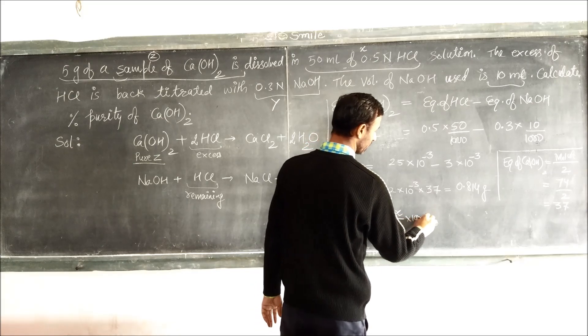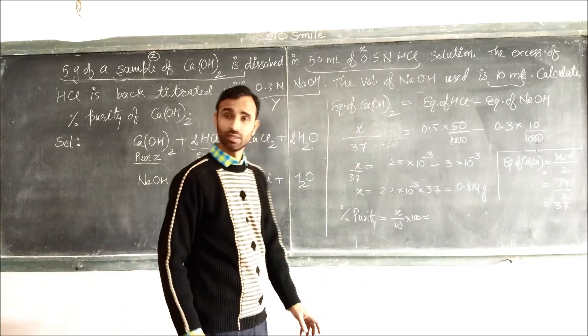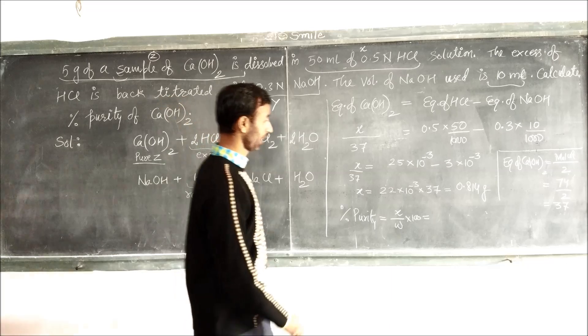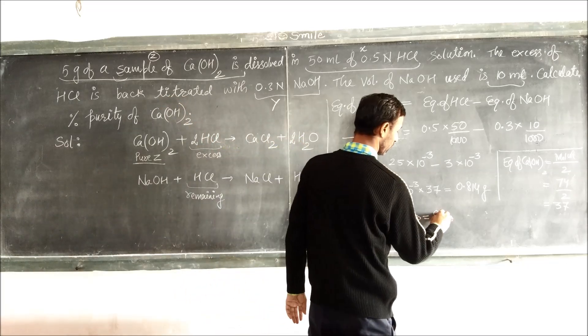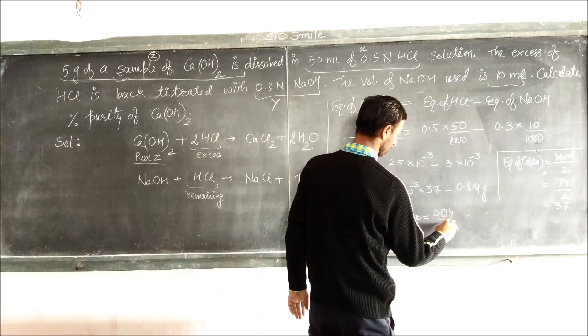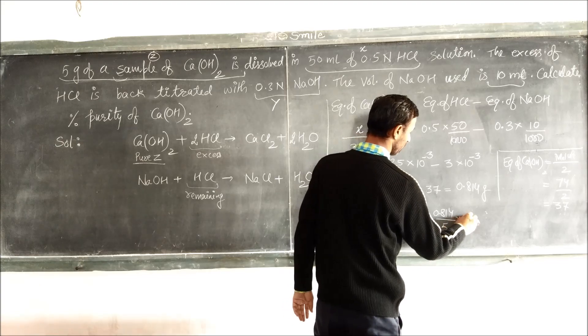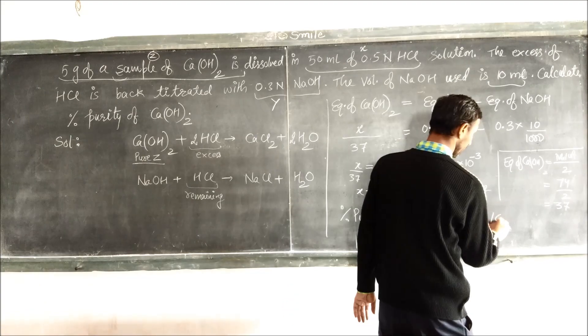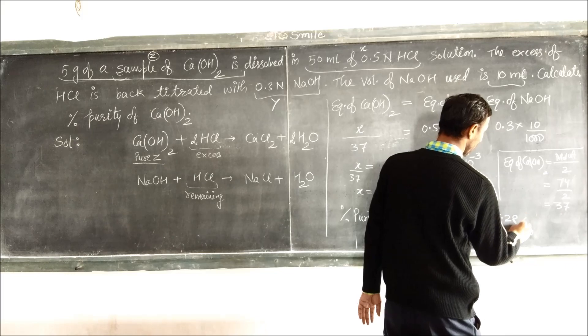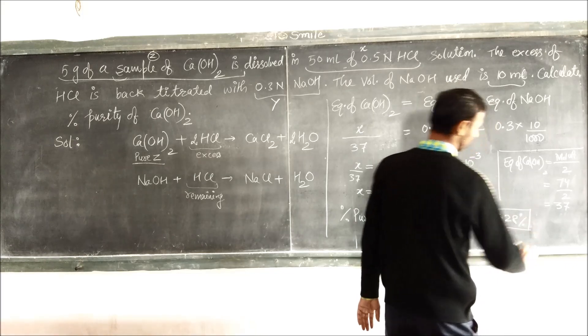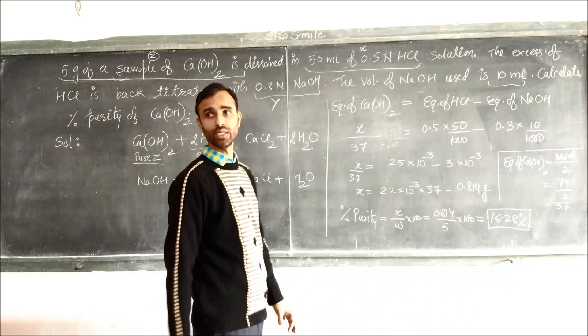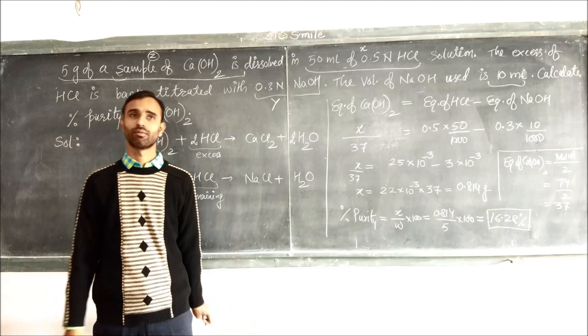So that means percentage purity is equal to weight of pure calcium hydroxide divided by weight of sample into 100. It is 0.814 divided by 5 into 100, which is 16.28 percent. Thank you.